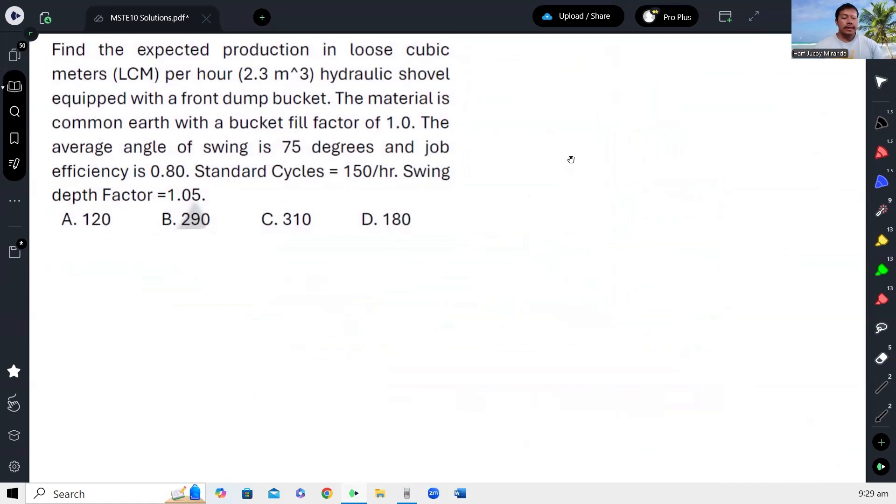Next, find the expected production in loose cubic meters per hour. 2.3 cubic meters hydraulic shovel equipped with a front dump bucket.